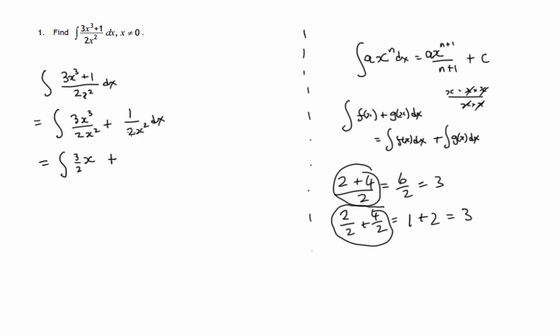Plus we keep the 2 on the bottom, but the x to the 2 can go up to the top of that fraction, become x to the minus 2. Now, that's using one of the laws of indices, which says x to the minus n is 1 over x to the n. So a power on the bottom of a fraction moves up to the top, multiplies the 1, and the power changes to a negative.